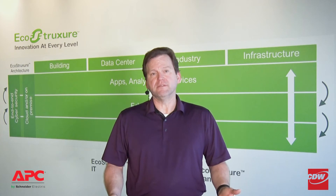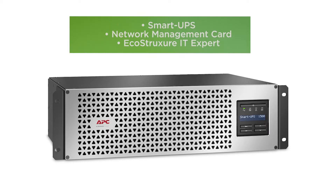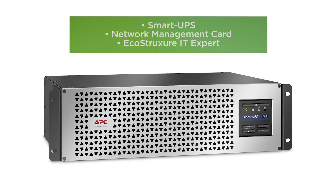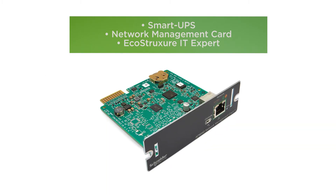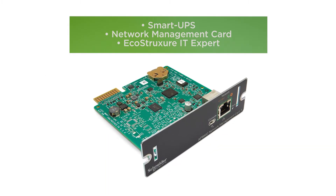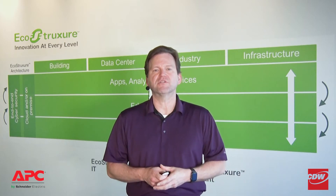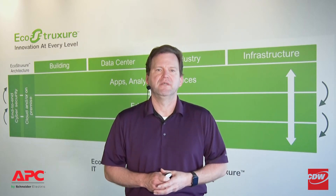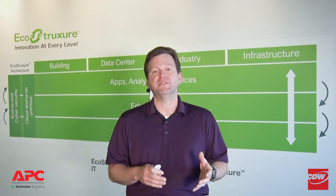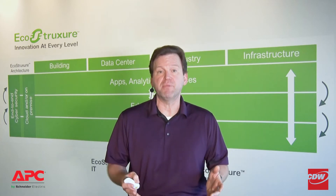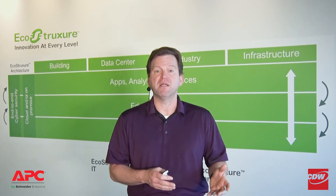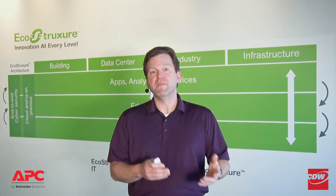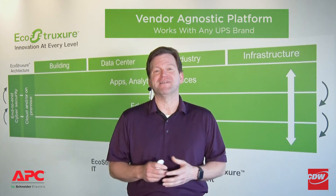What do you need to get started? The minimum hardware requirement is a Smart-UPS and, of course, a network management card so it can be connected to the network. Then you download the EcoStruxure Gateway software on your system of choice. You initiate an auto-discovery of a range of IP addresses for devices using SNMP and Modbus TCP. Remember, the software is vendor-agnostic.